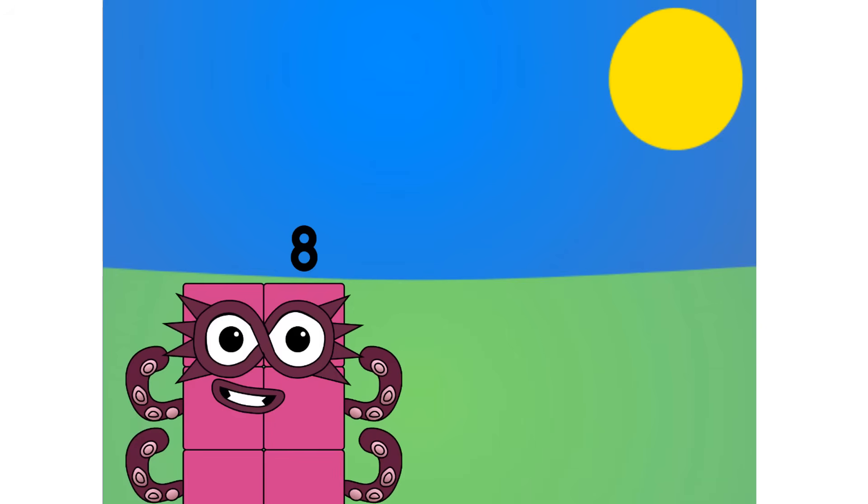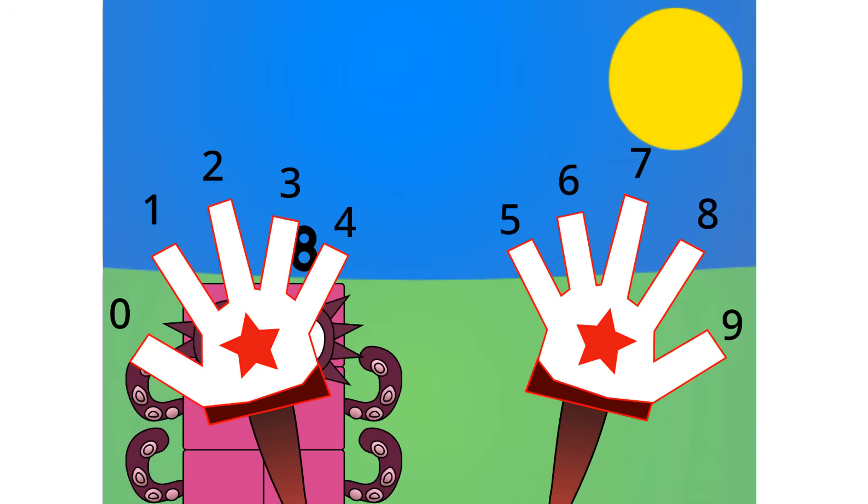As Ten said, humans count with base ten out of all bases because they have ten fingers, five on two hands.